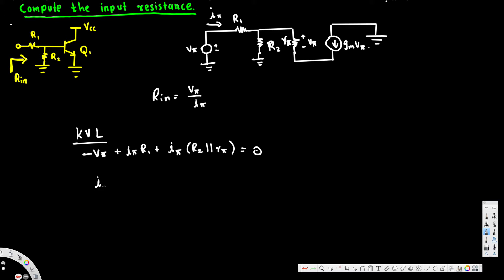Here if we simplify, I phi, if we take I phi common, this is going to be R1 plus R2 parallel R phi. And then I move this V phi to the other side, so this is going to be positive V phi right here.